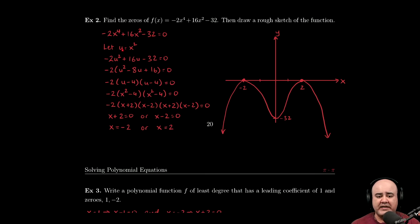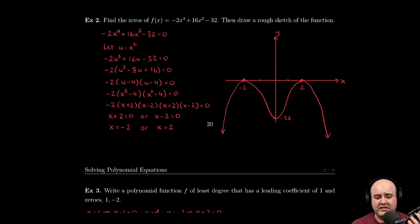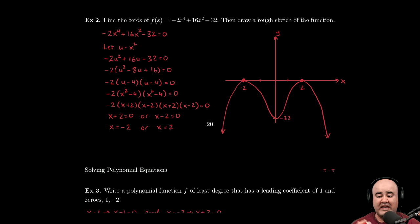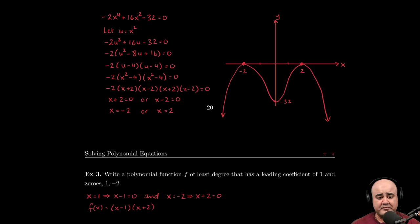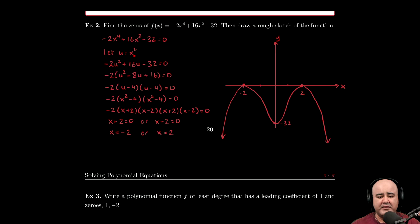And we solve these by letting our favorite letter, in this case I'm using u again, but there's nothing mystical or special about the letter u. You can use any other letter that you prefer. So if you let u equal to x squared, we can square both sides and get u squared equals x to the fourth.